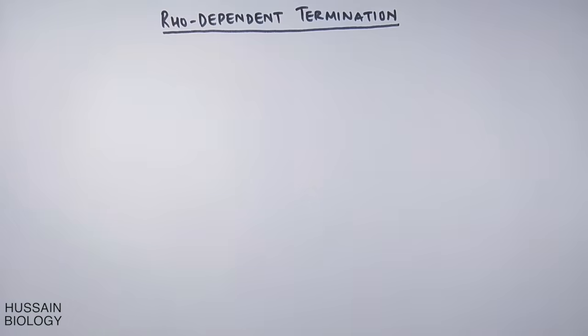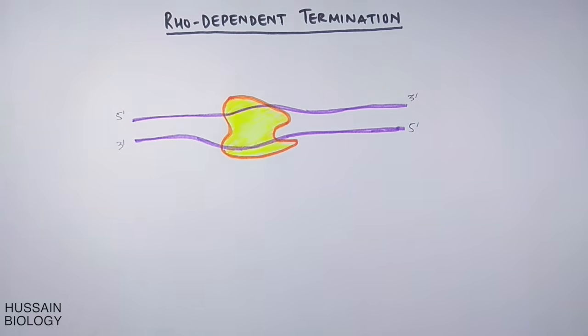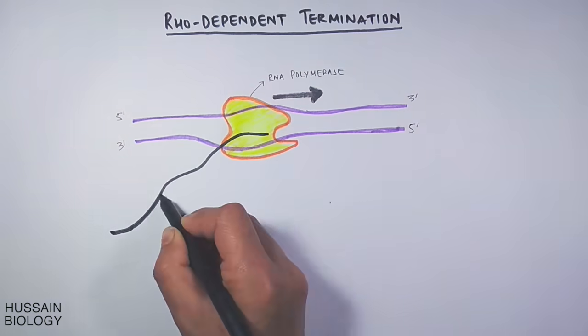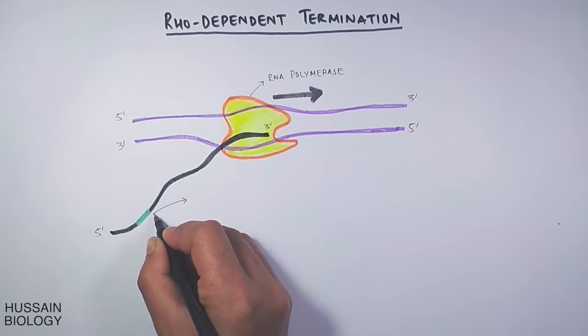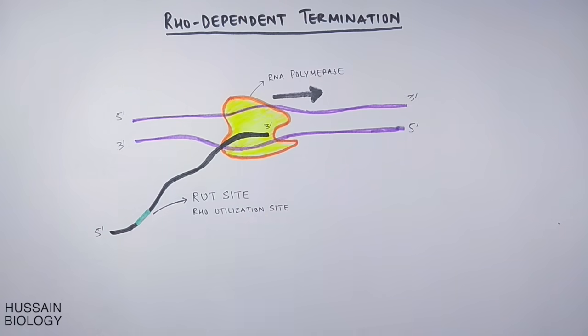In this diagram, we have a DNA molecule with RNA polymerase attached to it, which has synthesized an RNA molecule as shown. This nascent RNA molecule has one interesting site on it called the rut site—rho utilization site.